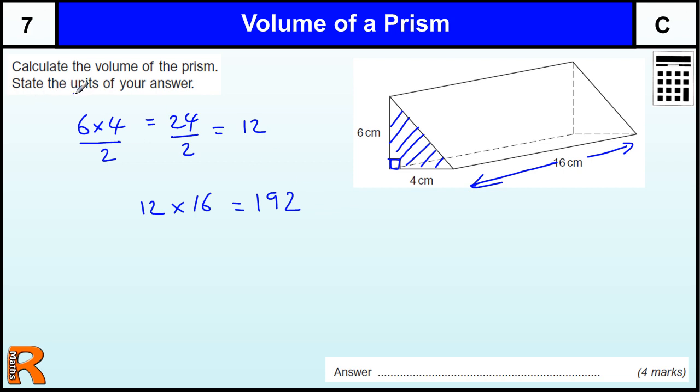State the units of your answer here. So there's four marks: three of them is for the 192 and there's one mark for doing the units of volume which is centimeters cubed. Be very careful to remember.